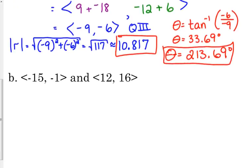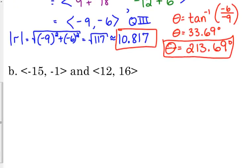Let's do one more like that. Negative 15, negative 1, that's in the third quadrant. 12, 16, that's in the first quadrant. So where do you think the resultant vector is going to be? Second? Maybe. We'll find out.